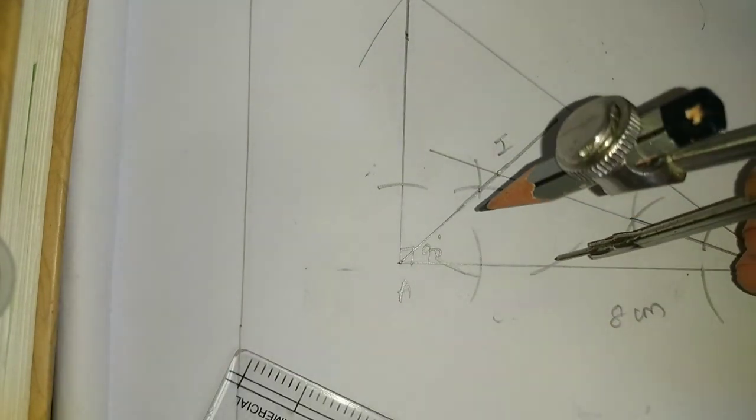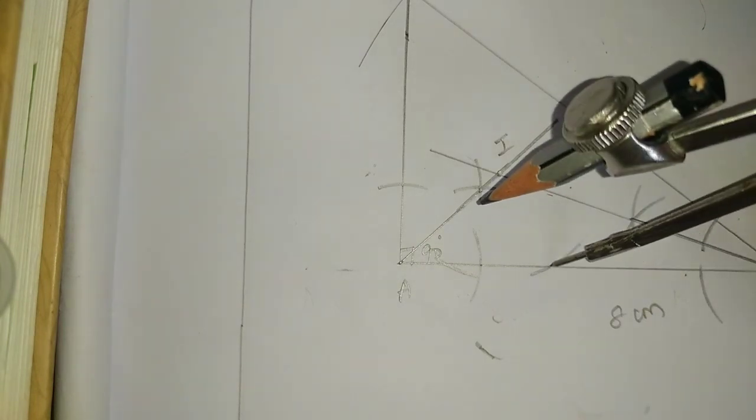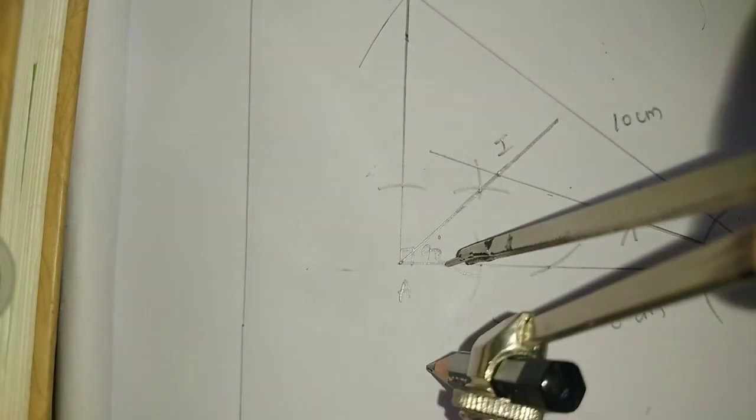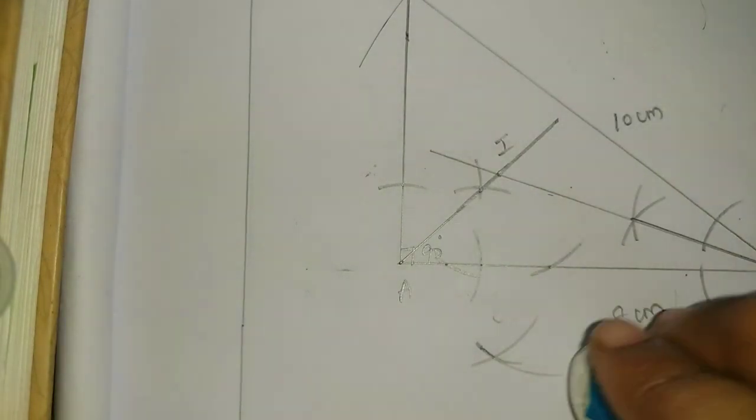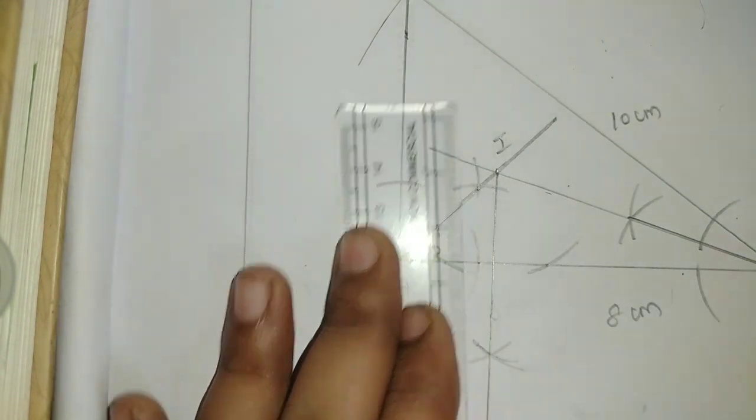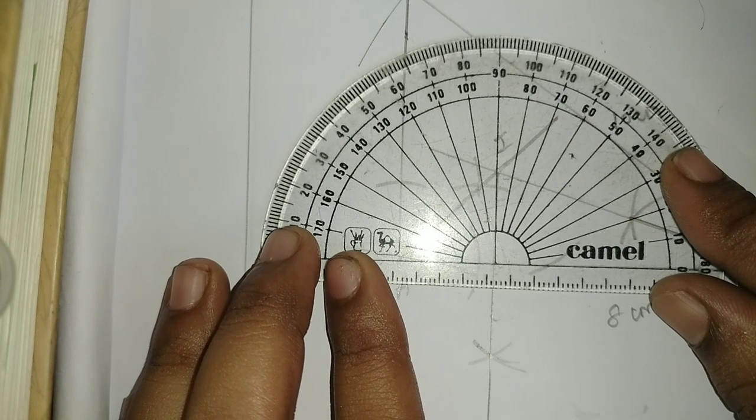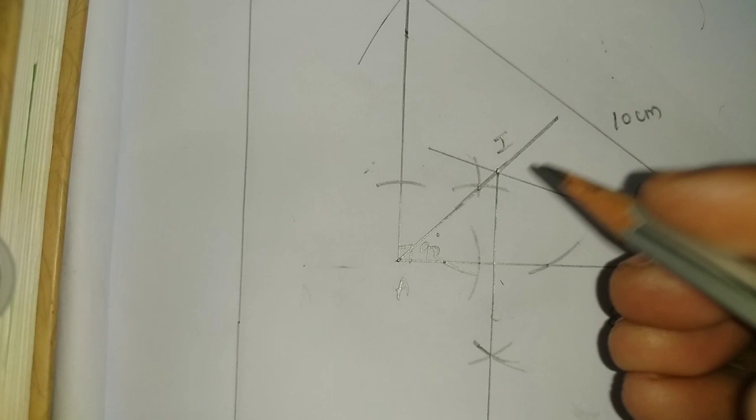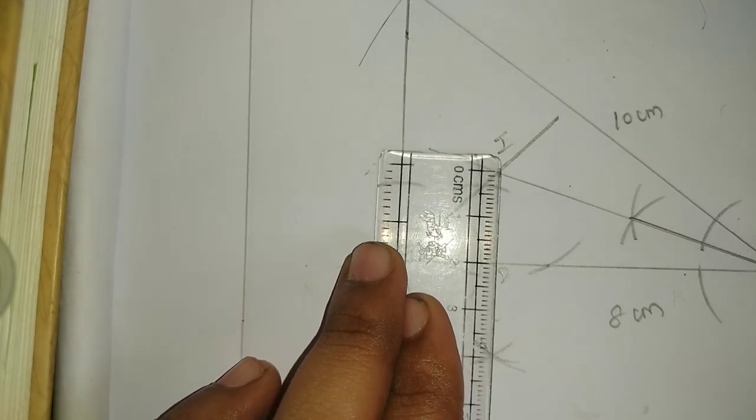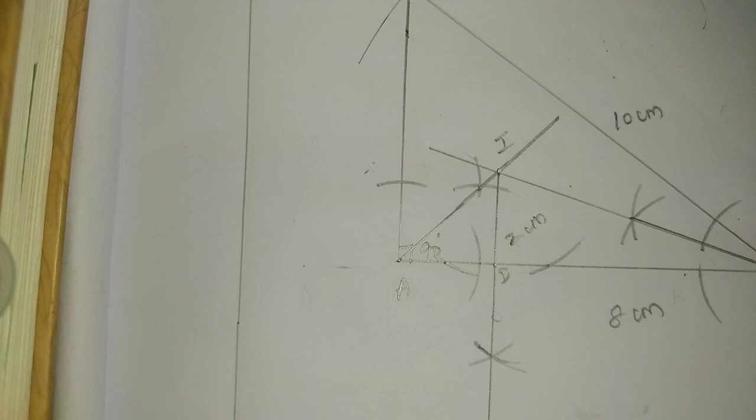Now where the arcs meet. Straight join, now it will be correct, it will be 90 degrees. So it will be D. If you measure, it will be 2cm. Now you will do the incircle.